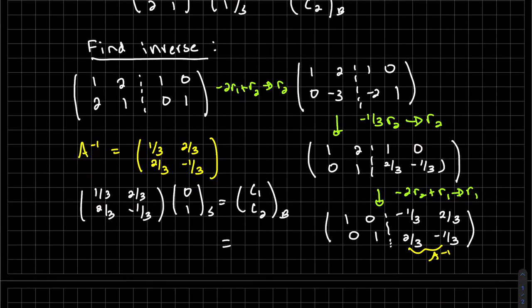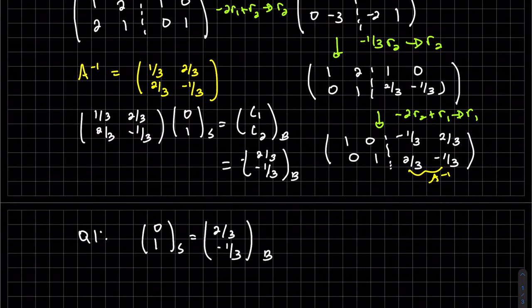So this is our inverse. We just multiply these two matrices. Looks like we get 2/3 for the top one, and -1/3 for the bottom. So there's our answer.